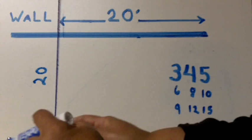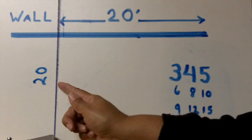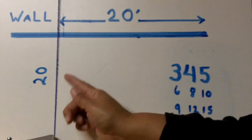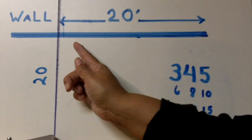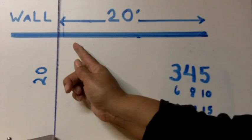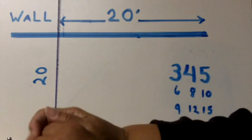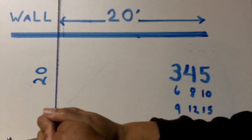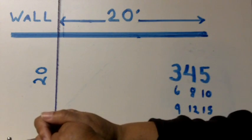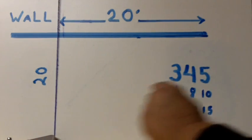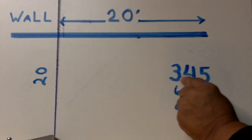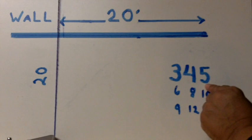So what I'm going to do is I'm going to show you how to square up the chalk line to an existing wall so that it's perfectly square. And the way you do that is with a math principle called the Pythagorean Theorem. Now what we like to call that out in the field is we like to call it the 3, 4, 5 formula.